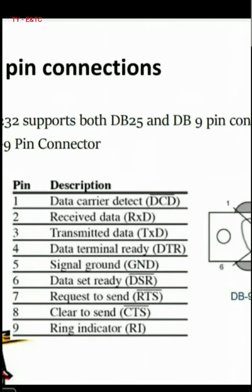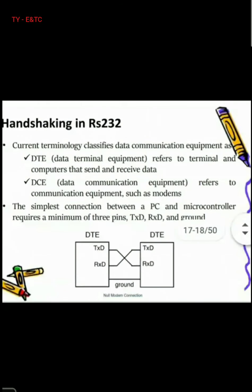On the left hand side is the computer with a DB9 connector, and on the right hand side is the microcontroller, also acting as DTE. The DB9 connector has RXD and TXD as pins 2 and 3. Serial data can either be transmitted or received. The microcontroller also has TXD and RXD on port 3.